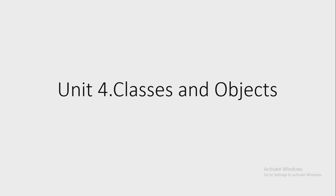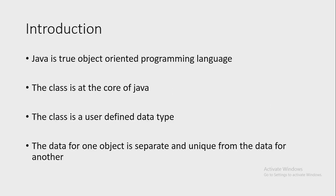We are studying our fourth chapter: Classes and Objects. Java is a true object-oriented programming language, and the class is at the core of Java. All the program code and data reside within objects and classes. A Java program is encapsulated in a class that defines the state and behavior of an object, known as the basic program component.